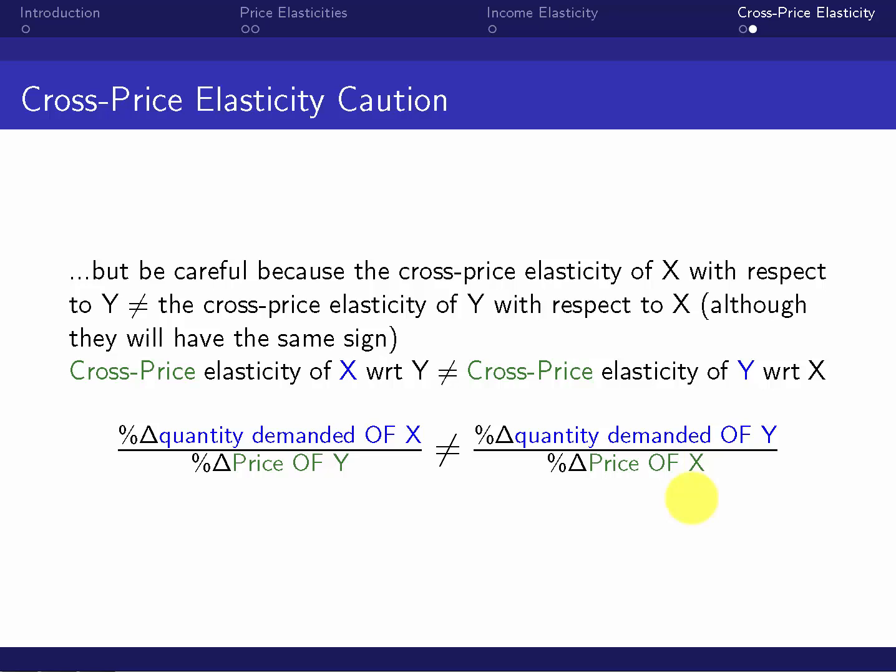It is possible for these things to be equal, but it is certainly not necessary. But they do have to have the same sign. Remember, signs of cross-price elasticity tell you if goods are complements or substitutes. So if I say that coffee and tea are substitutes, I can also say that tea and coffee are substitutes. It shouldn't make any sense if I take them in the reverse order for the relationship to turn from substitutes to complements.